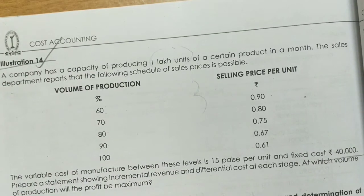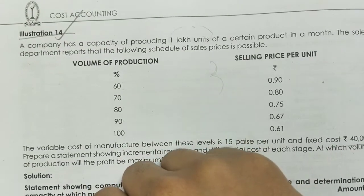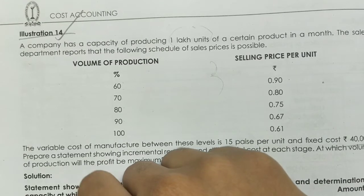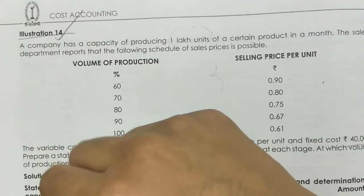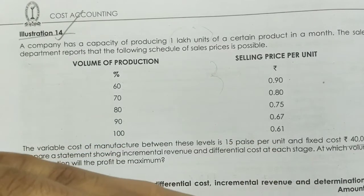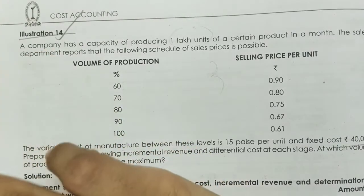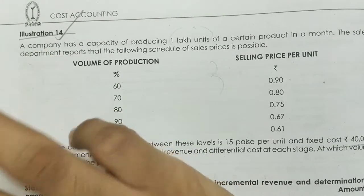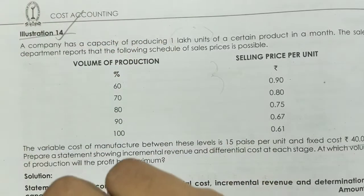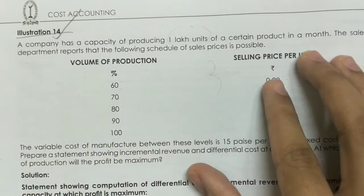A company has a capacity of producing 1 lakh units of a certain product in a month. The sales department reports that the following schedule of sales prices is possible.